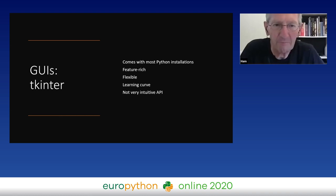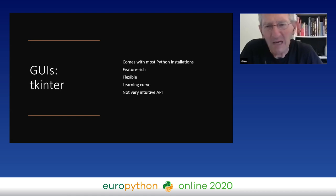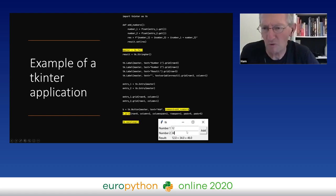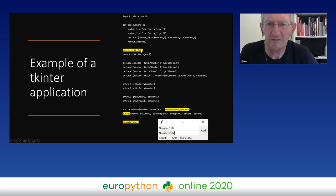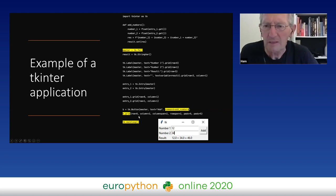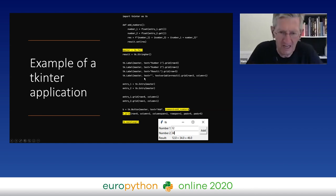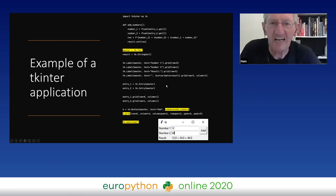In the Python world, one of the most obvious GUI options is TKinter, which comes standard with most Python installations. It has lots of features and is very flexible, but has a high learning curve and not a very intuitive API. Even a small application — like asking for two numbers to add — already requires quite a lot of non-obvious code: defining a root, starting a main loop, working with grids, and callback options.